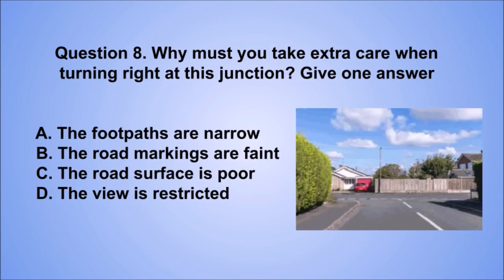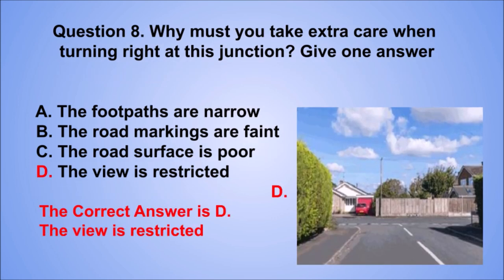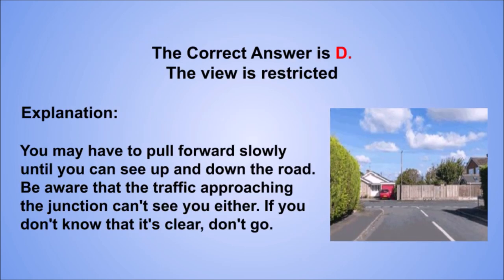Question 8. Why must you take extra care when turning right at this junction? Give one answer. A. The footpaths are narrow. B. The road markings are faint. C. The road surface is poor. D. The view is restricted. The correct answer is D, the view is restricted. You may have to pull forward slowly until you can see up and down the road. Be aware that traffic approaching the junction can't see you either. If you don't know that it's clear, don't go.